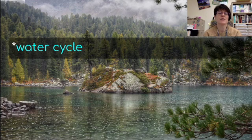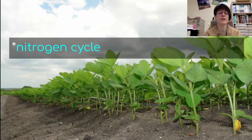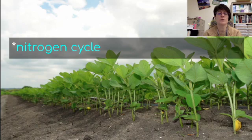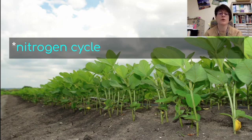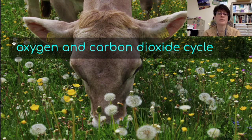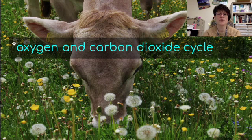In desert areas there's not as much water, and in rainforests there's a lot of water. Also, the nitrogen cycle determines how rich the soil is. We see soybean plants in the background — nitrogen-fixing bacteria take nitrogen from the atmosphere and put it into compounds, enriching the soil. There is also the oxygen and carbon dioxide cycle: plants take carbon dioxide and produce oxygen and food, while animals like cows produce carbon dioxide which plants then use. This cycle keeps a balance in ecosystems.